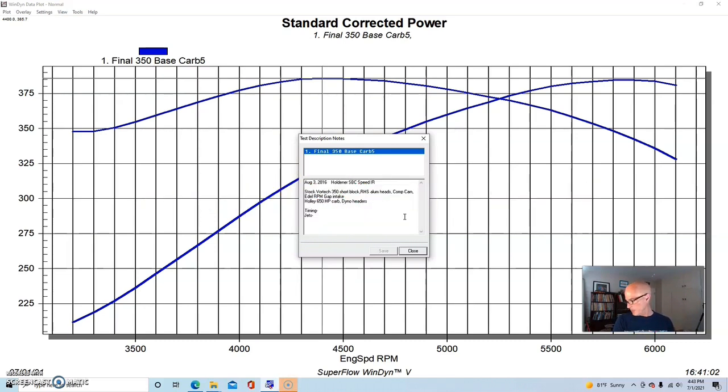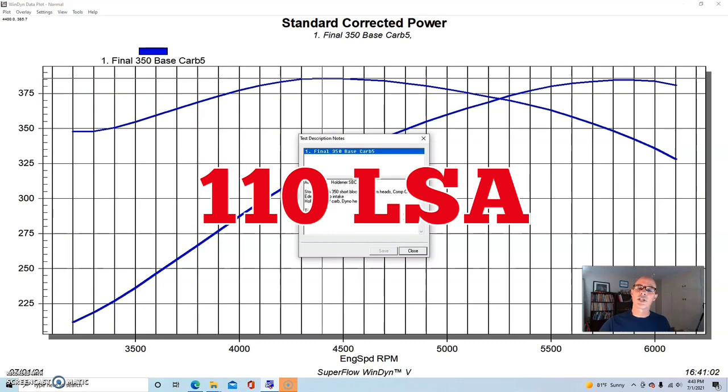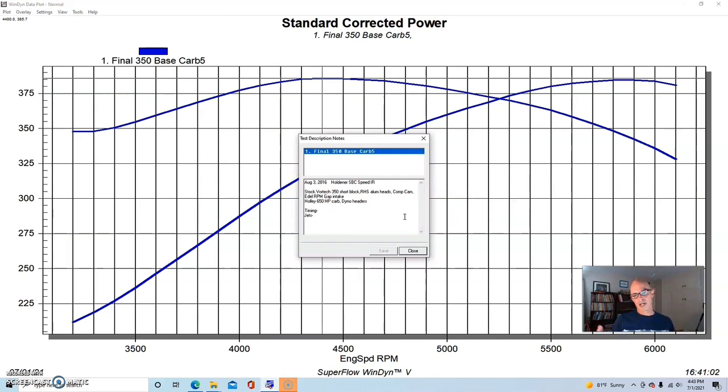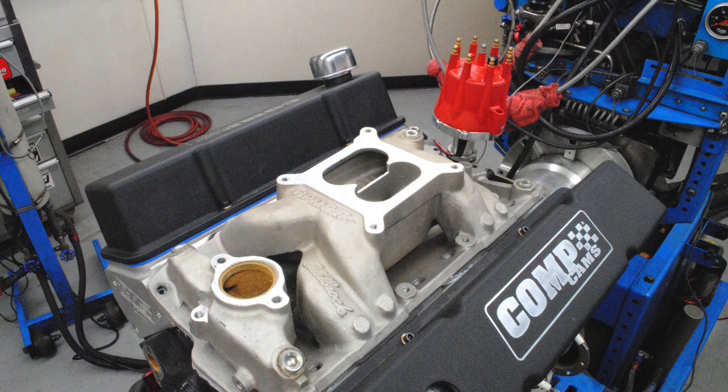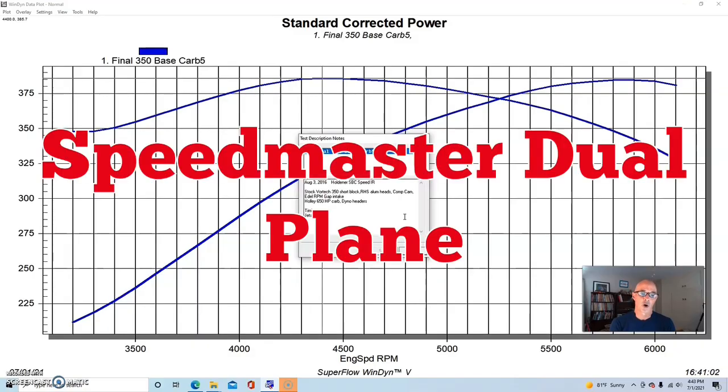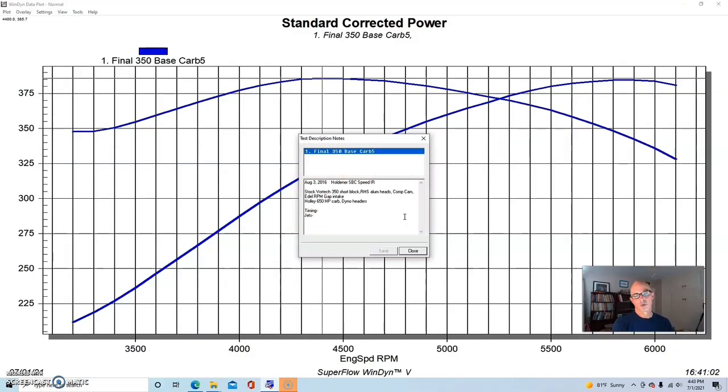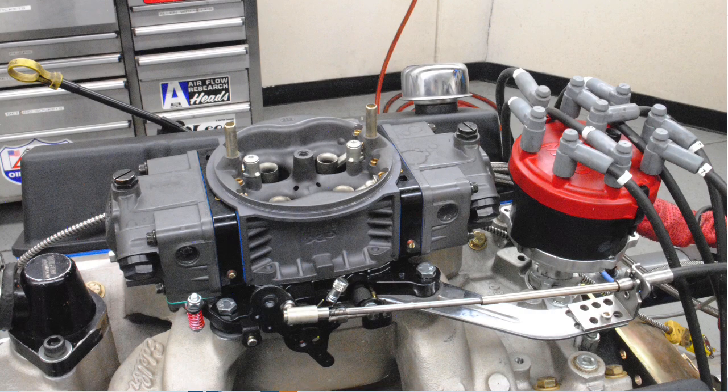We reused the factory hydraulic roller lifters in this application. We had previously removed all of the factory EFI stuff from the Vortec motor and replaced it with a dual plane carbureted intake manifold, in this case an Edelbrock RPM Air Gap. We also replaced all the injectors and the EFI stuff with a simple carburetor, a Holley 650 HP, and we also used an MSD distributor.